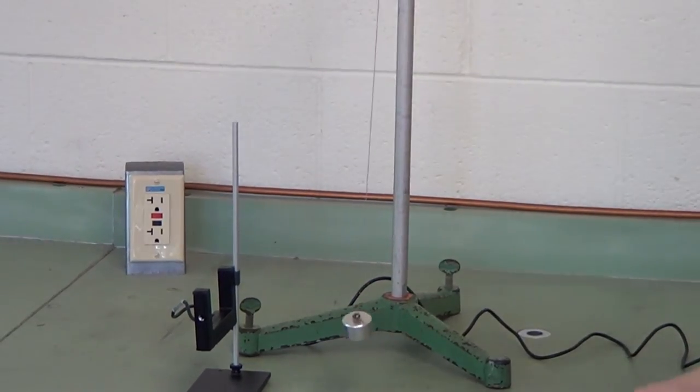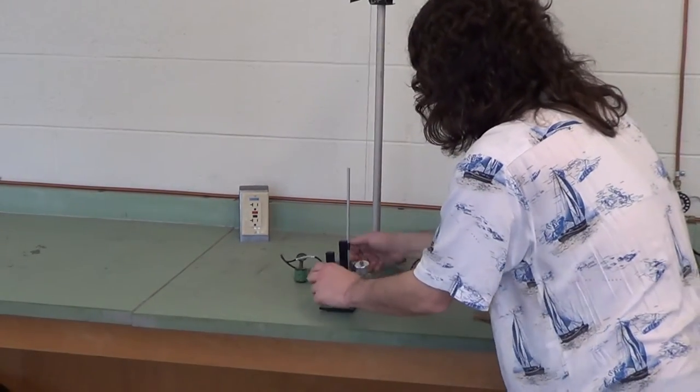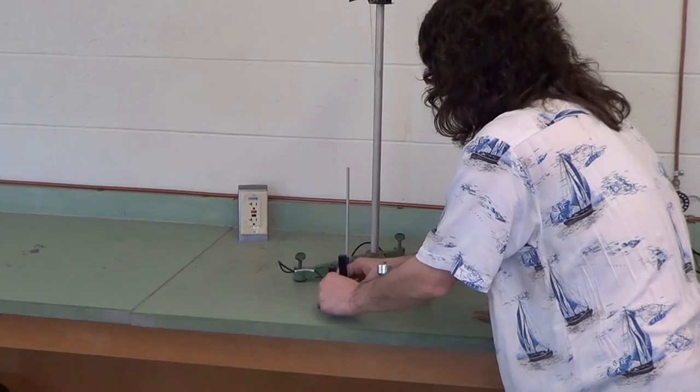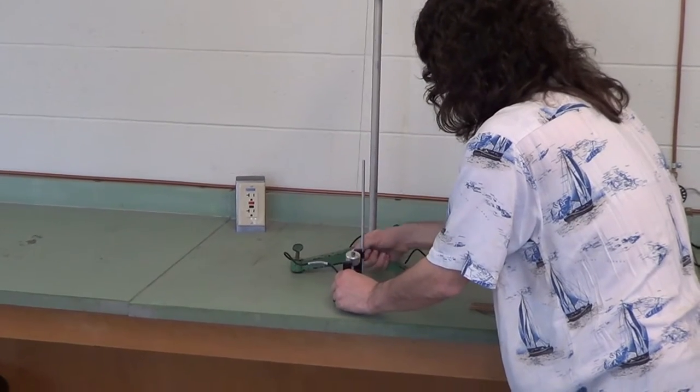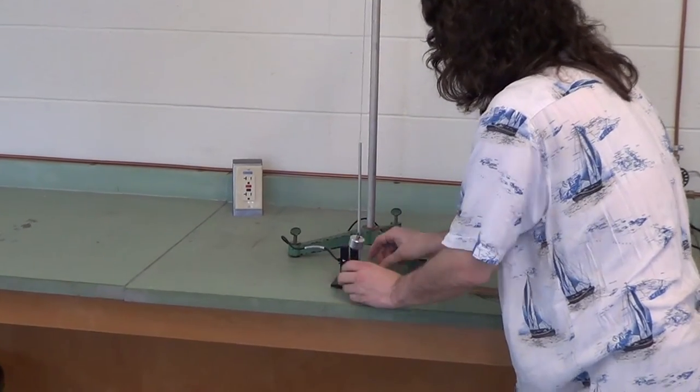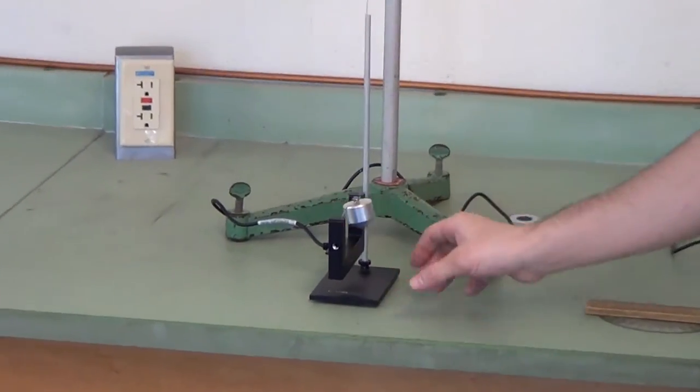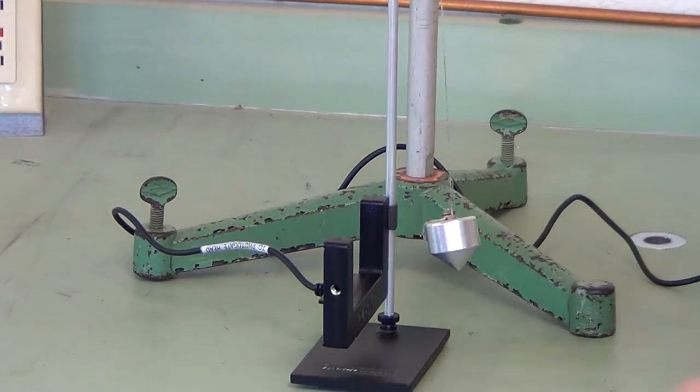Once we have that set, we bring the photo gate in, set it up so that the bob doesn't hit it, but it does block the photo gate sensor. See how it blocks that? We want it roughly in the middle.